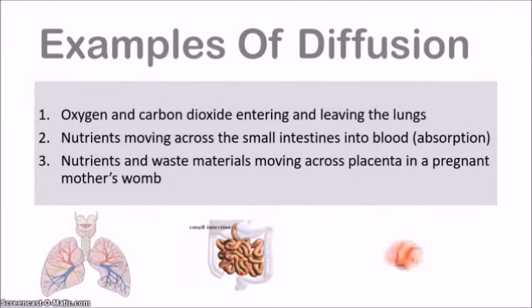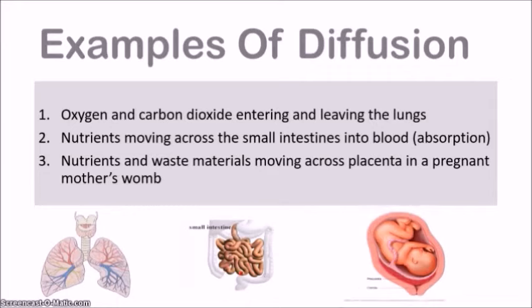Let's look at some examples of diffusion. First, oxygen and carbon dioxide entering and leaving the lungs — necessary for respiration. Second, nutrients moving across the small intestines into the blood through absorption. Third, nutrients and materials moving across the placenta in a pregnant mother's womb, where nutrients go to the baby and the baby's waste materials pass into the mother's blood. All three of these processes occur through diffusion.